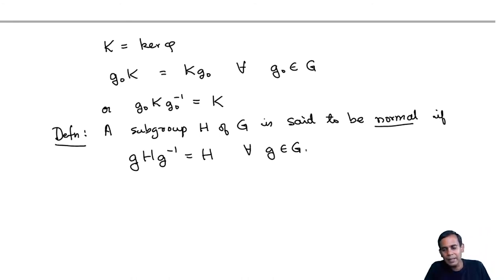So we have seen that the kernel of a homomorphism is always a normal subgroup.